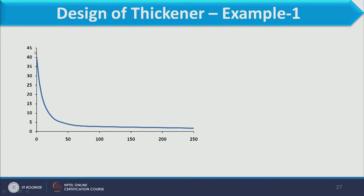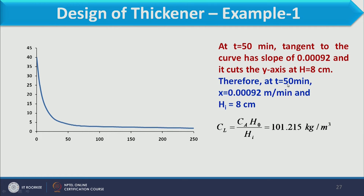Using the batch sedimentation data, a graph of H versus time is drawn. At T equal to 50 minutes, the tangent to the curve has slope 0.00092 m/min and cuts the Y-axis at H equal to 8 cm. Therefore the sedimentation rate X = 0.00092 m/min, HI = 8, and using the expression CL = CA × H0 / HI, we calculate CL = 101.215 kg/m³.